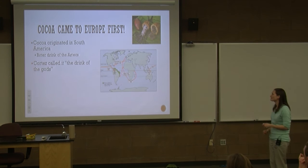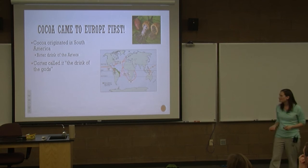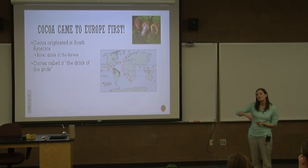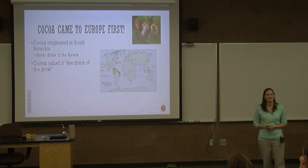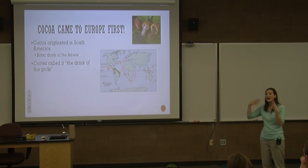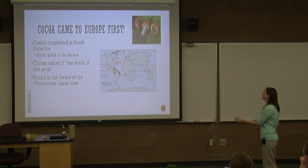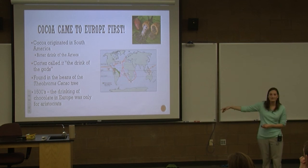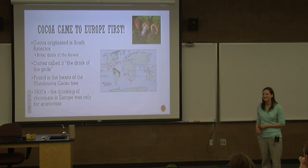A quick thing about chocolate — cocoa came to Europe actually first, before coffee or tea. It originated in South America from the cocoa tree. Cocoa was a bitter drink of the Aztecs. Christopher Columbus actually brought it back with him to Spain, but they didn't realize its utility until Cortez drank it in the court of Montezuma the Second and called it 'the drink of the gods.' The caffeine effects were apparent. It comes from the Theobroma tree. Around 1500 — 100 years before tea or coffee made it to Europe — at least the aristocrats in Europe were drinking hot chocolate, so they first started ingesting caffeine from chocolate.